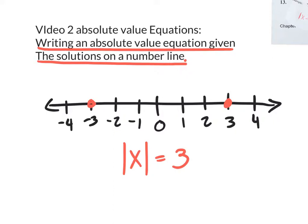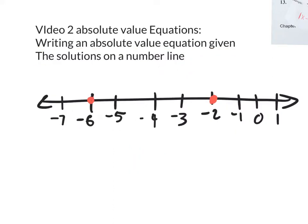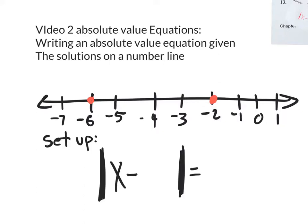Let's go for something a little more challenging. Let's say our answers were negative six and negative two. It gets a little more complicated. The setup is: absolute value signs with x minus a blank spot, then equals a blank spot. Inside, we're going to put x minus the midpoint.